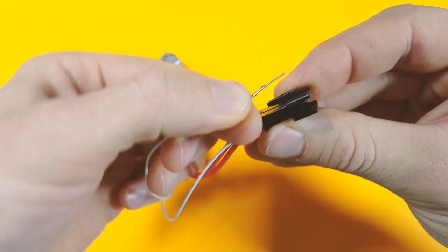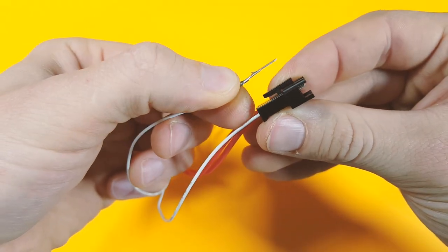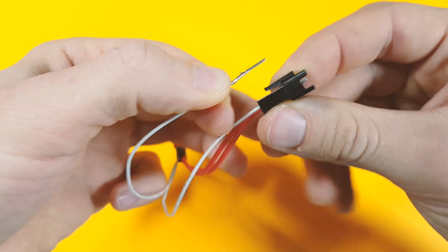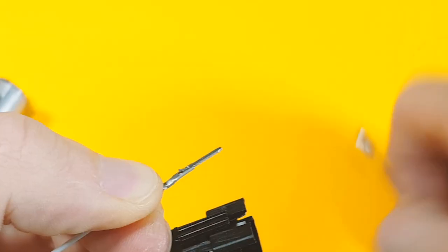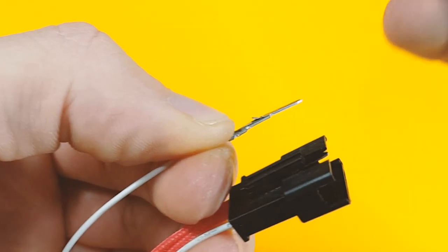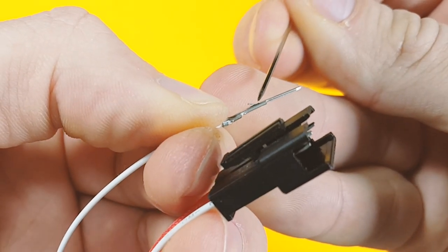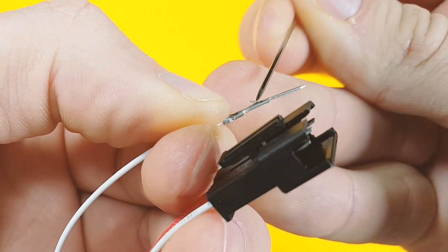This is how the crimp sits inside of the plastic housing. The locking tang is this tiny feature on top of the crimp. This is what we need to depress to get the crimp out.